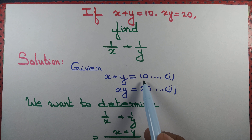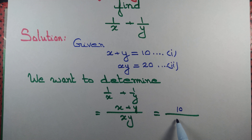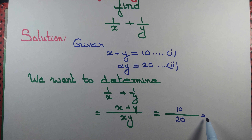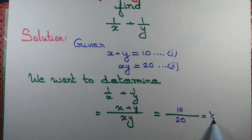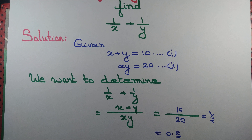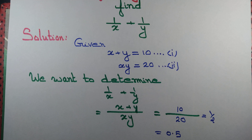Now, x plus y by equation 1 is simply equal to 10, and xy by equation 2 is simply equal to 20. So 10 by 20 is 1/2, or 0.5, and we are done.